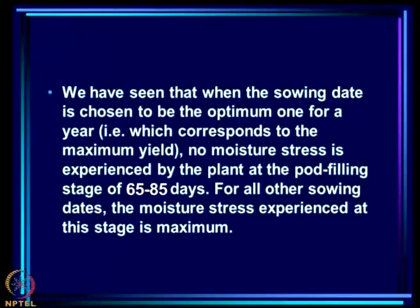Today we continue our discussion on monsoon variability and agriculture. Last time we saw that when the sowing date is chosen to be the optimum one for a year, which corresponds to the maximum yield, no moisture stress is experienced by the plant at the pod filling stage of 60 to 80 days after sowing.